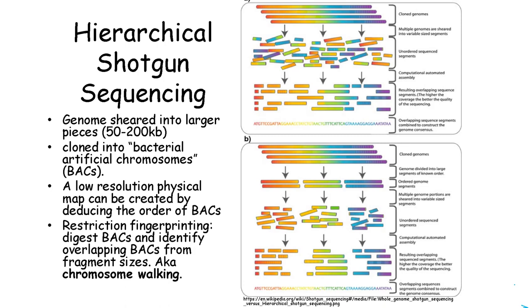A slightly different method for genome sequencing is hierarchical shotgun sequencing, where we break the genome into larger pieces than in whole genome shotgun sequencing. These pieces are larger than a plasmid or bacteriophage can accommodate, so we clone them into bacterial artificial chromosomes. Using restriction enzyme fingerprinting, we can identify the order of these large fragments on the genome — this process is called chromosome walking. We can then sequence each fragment like we would in whole genome shotgun sequencing, solving a much smaller puzzle for each fragment separately. The fragments are then assembled to form the genome sequence.